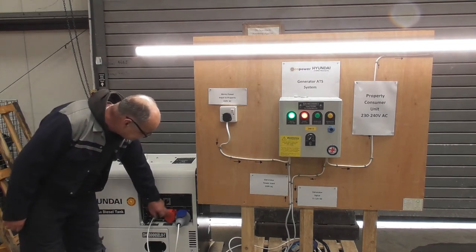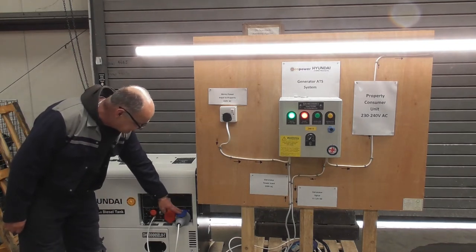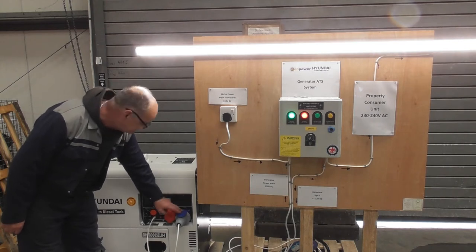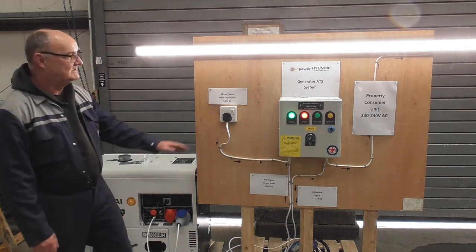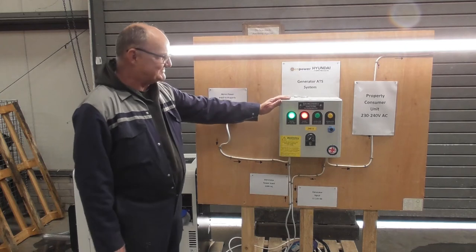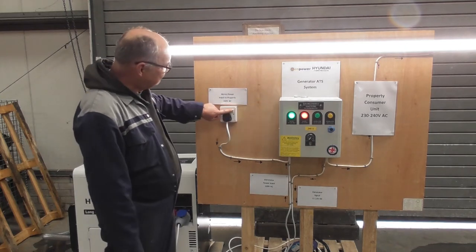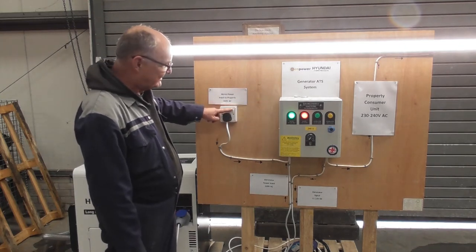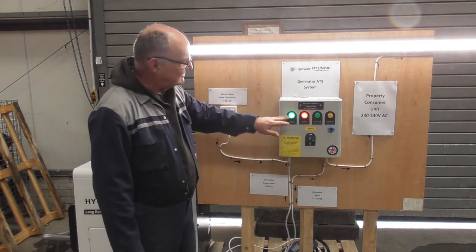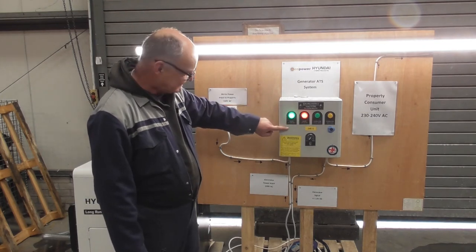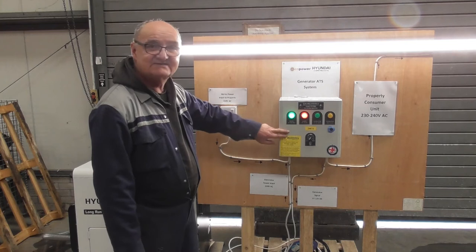The T stands for three phase but it also has single phase. For this demonstration I'm using the single phase as opposed to the three phase. So what's going to happen is I'm going to simulate mains failure by turning off this switch. Both of these lights will go out and a signal will come from this box to the generator asking it to start.